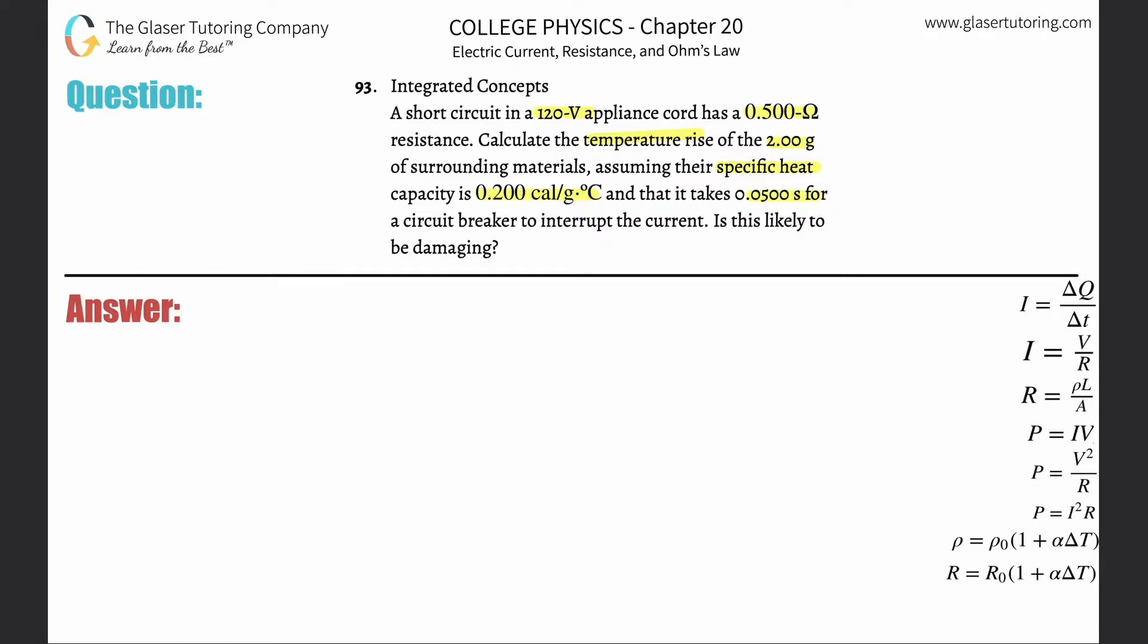Is this likely to be damaging? First thing is, if they're asking us to calculate the temperature rise and they're giving us mass and specific heat, I know I'm dealing with this formula: Q equals mc delta T. To find delta T, which represents the change in temperature or the temperature rise, I simply divide by mc on both sides.